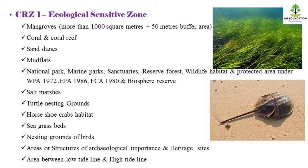The islands are CRZ1 areas. The CRZ1 areas are Ecologically Sensitive Areas. Here are mangroves — there are areas of a thousand square meters in mangroves, and there are 50 meters in buffer area. There are also coral reefs, sand dunes, and mudflats.